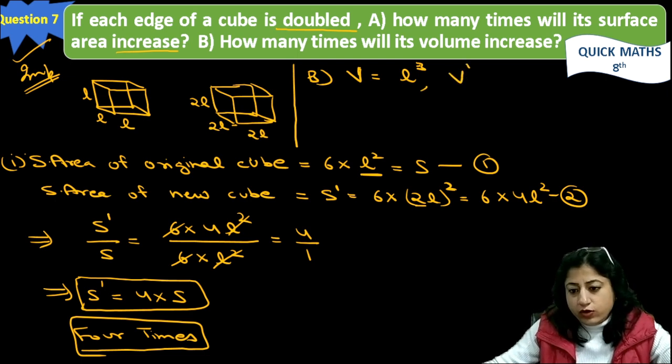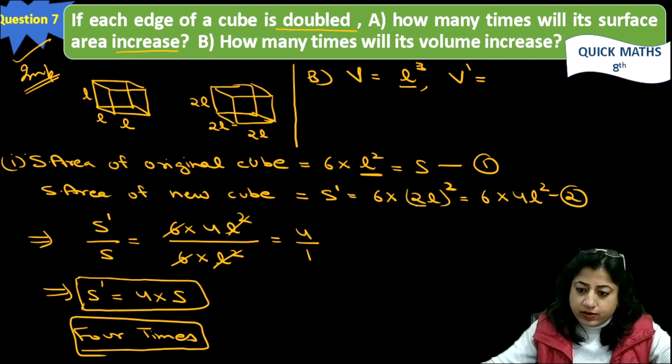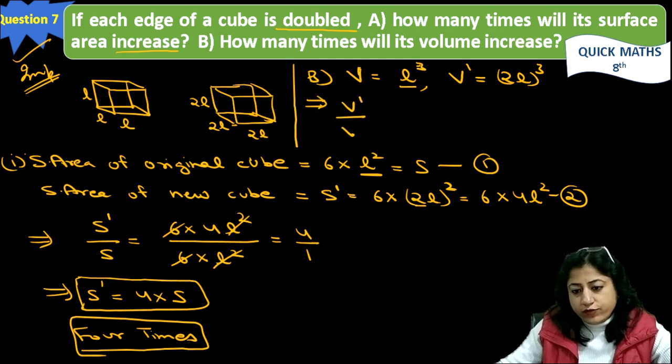Now if the new volume is denoted by V dash, then the length will be doubled, so it will be 2L cube.